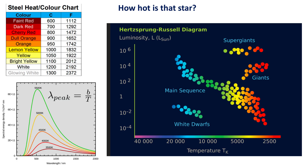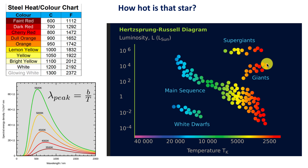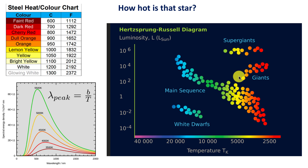From Wien's law — lambda-peak equals constant b divided by T — as we look at hotter and hotter stars from 3500 to 5500 degrees K, the peak keeps shifting. This is shown in the famous Hertzsprung-Russell diagram, which plots luminosity compared to the sun's luminosity. The hottest stars are bluer, the coolest are reddish. The scale runs from 40,000 degrees Kelvin down to about 2,000 degrees Kelvin. Most stars lie on the main sequence; white dwarfs are extremely small but hot, while giant and supergiant stars are very large and radiate a lot of energy.